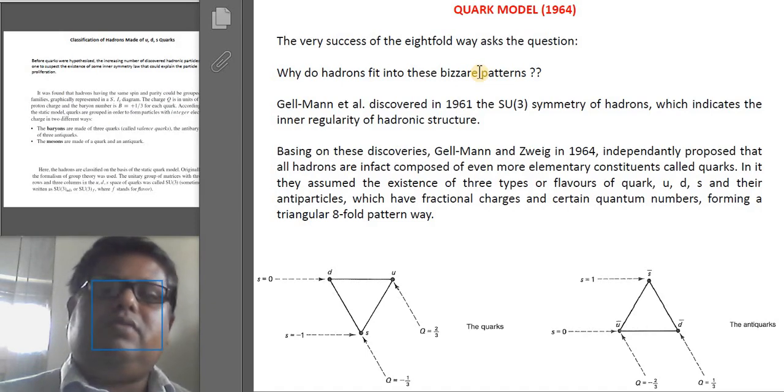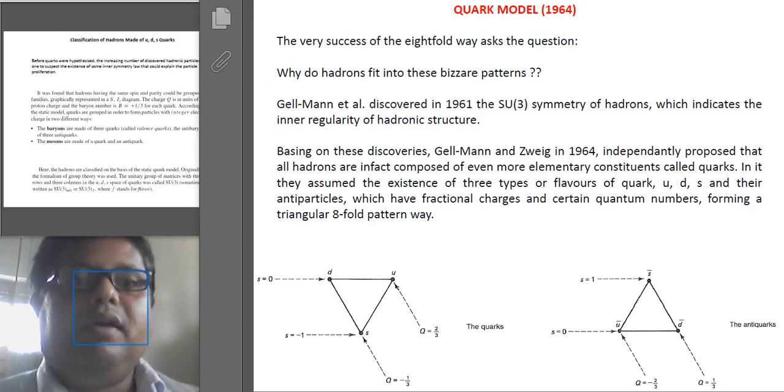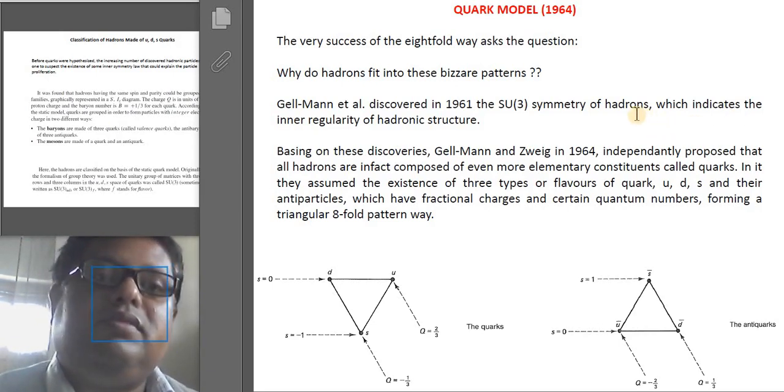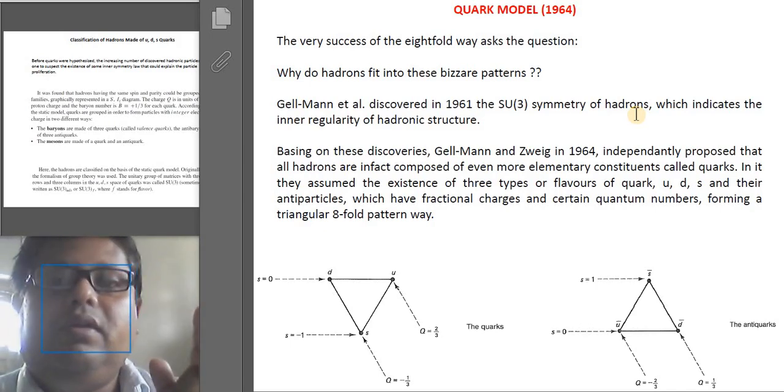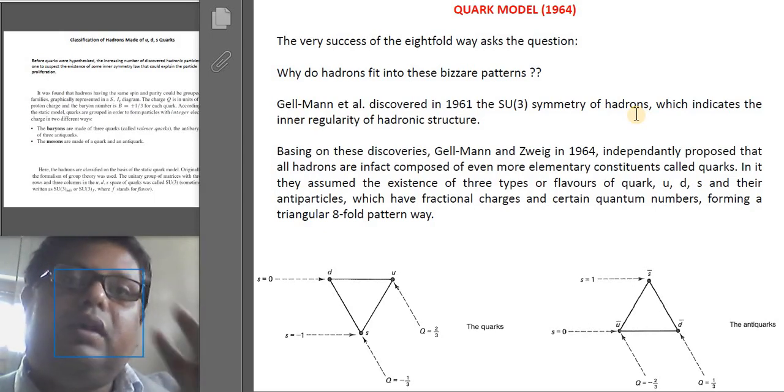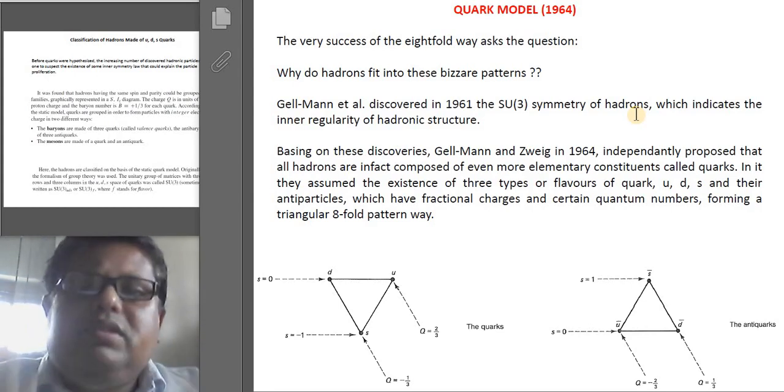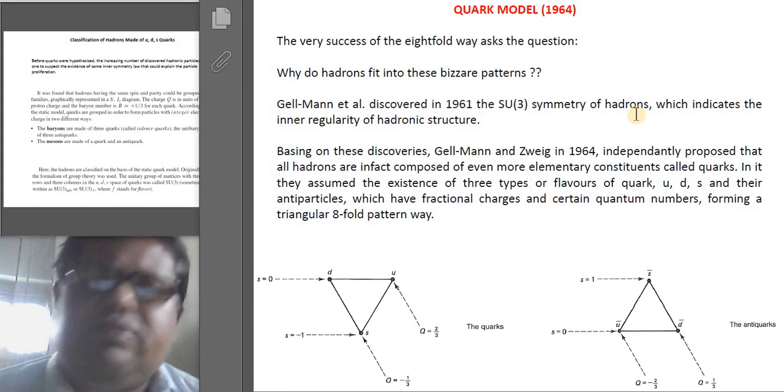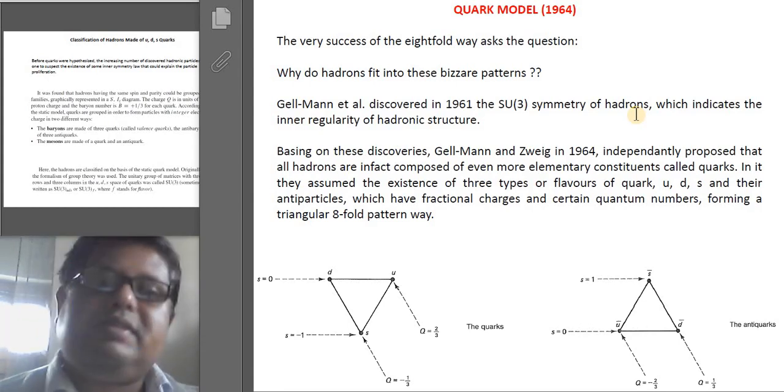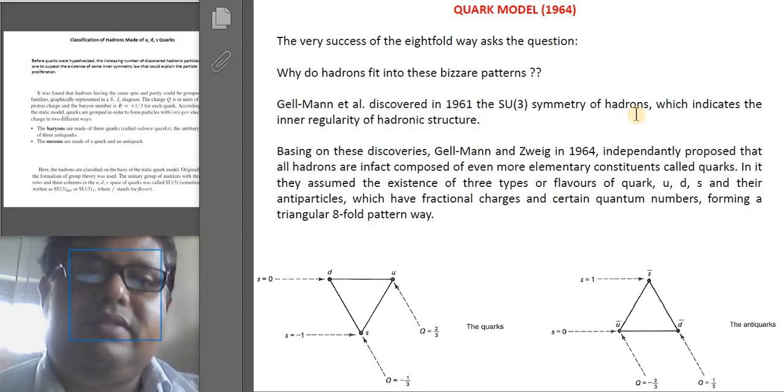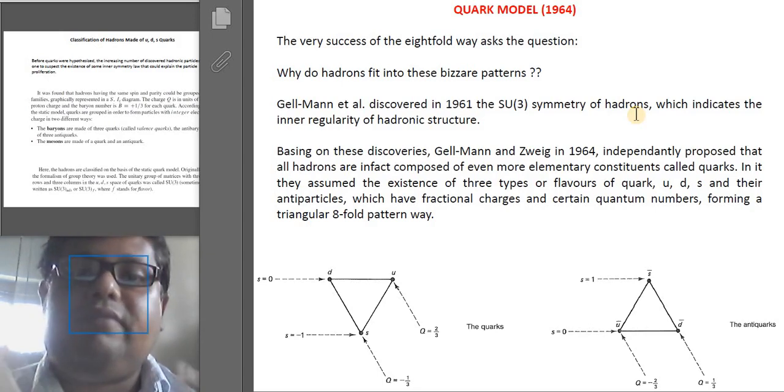Now Gell-Mann and Zweig both discovered in 1961 that the SU(3) symmetry of hadrons—if we assume that these hadrons have SU(3) symmetry, then we can get a glimpse of this regularity of the structure. But then the question is, why do the hadrons show the SU(3) symmetry?